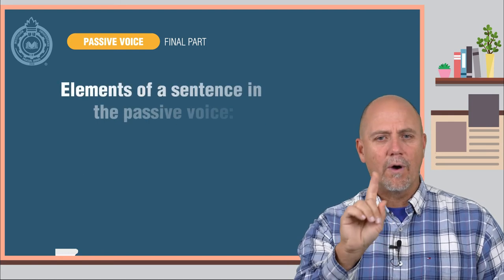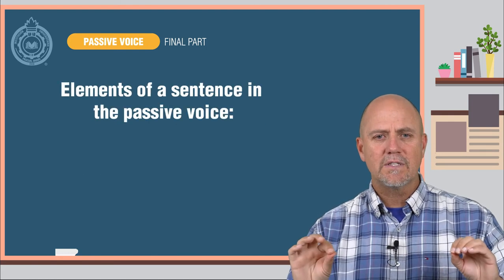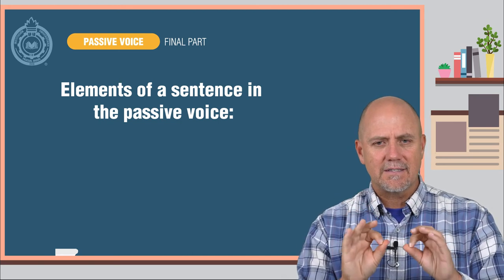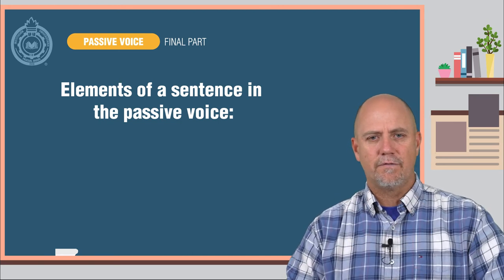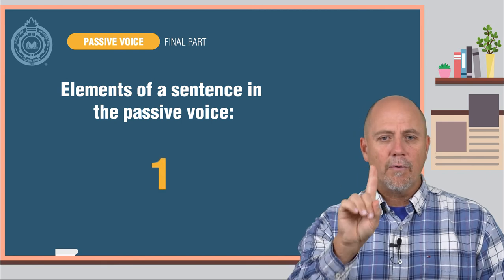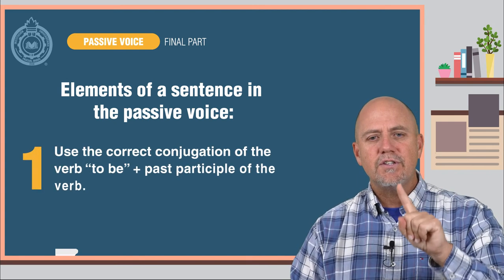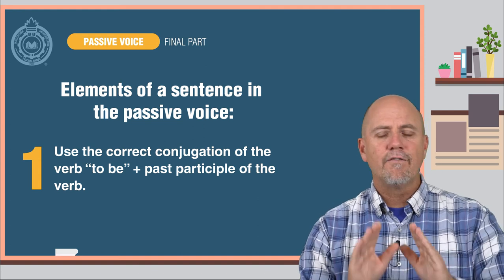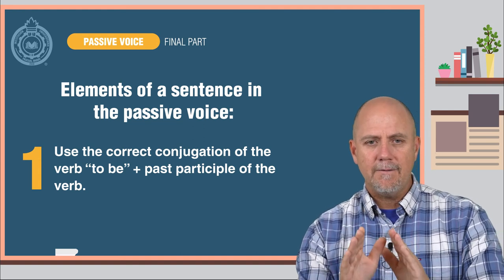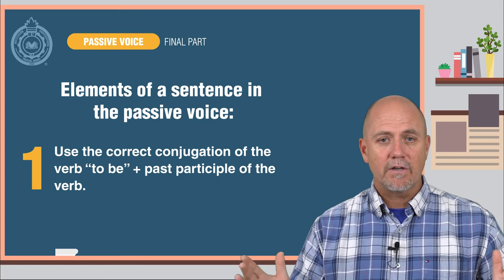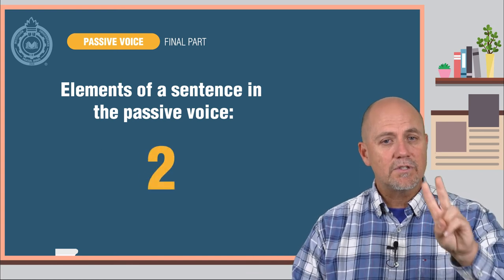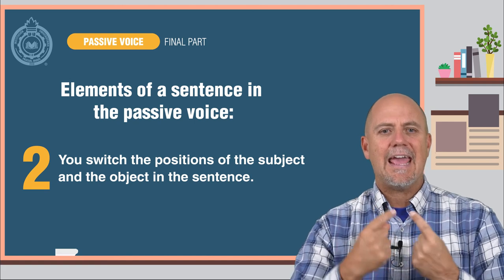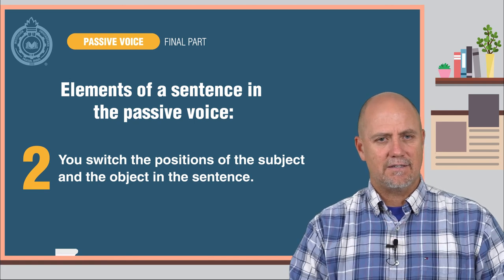So, one more time, before we finish with this theme, let's go over the two elements of a sentence in the passive voice. Number one: you must use the correct conjugation, depending on the tense, of the verb 'to be' plus the past participle of the verb. And number two: you switch the position of the subject and the object in the sentence.